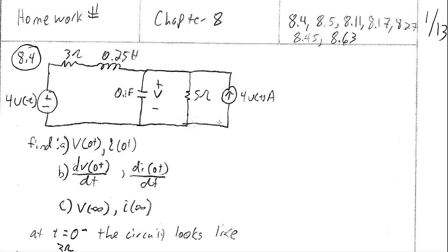In this first problem we have this schematic given here. We have a 4u(-t) voltage source, which means prior to t=0 this was behaving like a 4 volt voltage source, and then after t=0 it's going to behave like a short circuit. We have a 3 ohm resistor, a 0.25 Henry inductor, a 0.1 farad capacitor — and the voltage across that capacitor is our reference V — and then a 5 ohm resistor and a 4u(t) amp current source. At t=0, this voltage source is effectively turning off and becoming a short simultaneously with this current source going from an open circuit to being a 4 amp current source. So simultaneously those two things are happening.